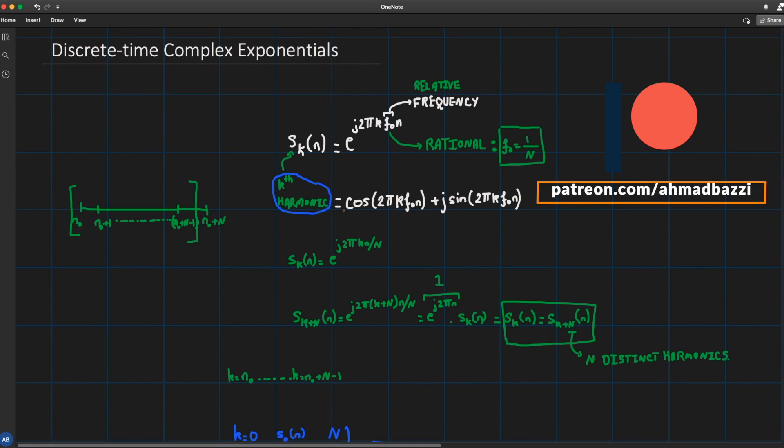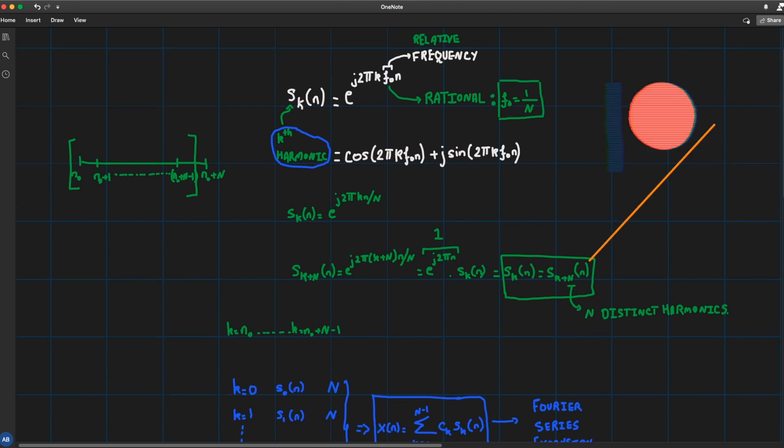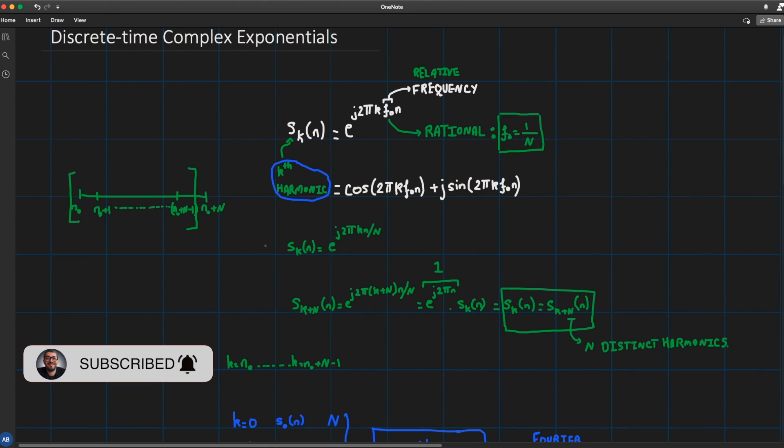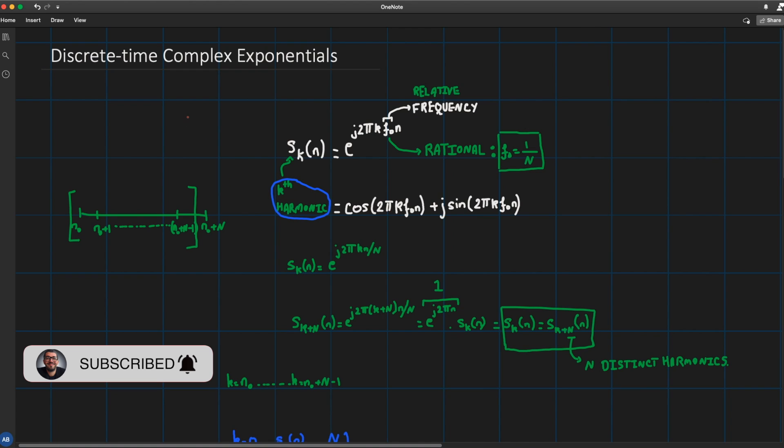How do we define it? What is a relative frequency? And what differentiates a discrete-time complex exponential from the continuous time case? We will see that unlike the continuous time case,